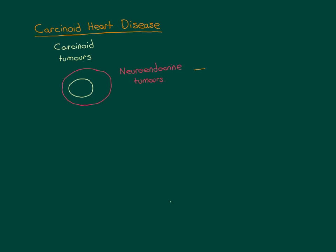A neuroendocrine tumour is one that arose originally from a neuroendocrine cell — the initial cell that started off the entire tumourigenesis process. Tumourigenesis is a multi-step microevolutionary process where you gradually produce stranger and stranger clones of cells through accumulation of mutations, until eventually they gain properties like invading surrounding tissue and destroying it, at which point we call it cancer.